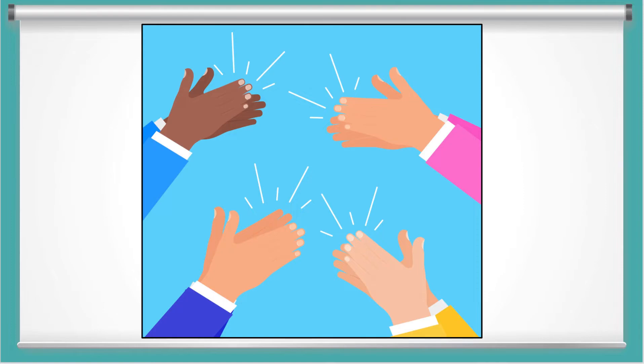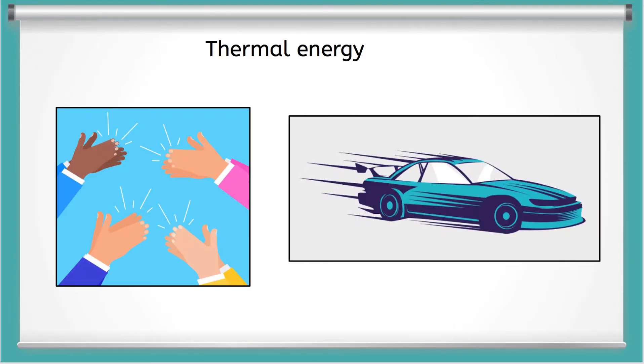It shows up as heat, and it's also called thermal energy to remind you that it shows up as heat. And just like kinetic energy and potential energy, thermal energy has a checklist so that we know if it exists.